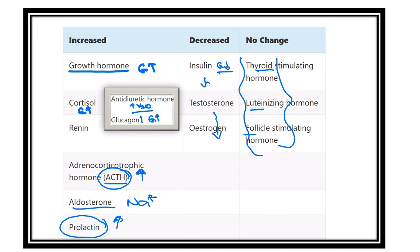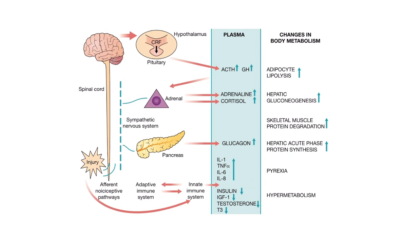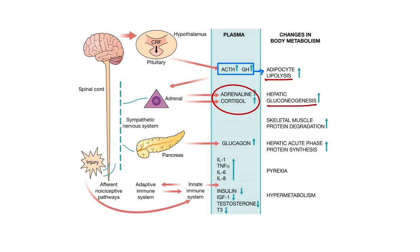This is a snapshot taken from Bailey and Love's surgery book. Here we can see different hormones that increase. First, adrenocorticotropic hormone and growth hormone — they are responsible for lipolysis and increasing lipid content in the blood. Adrenaline and cortisol also increase and are responsible for hepatic gluconeogenesis, so glucose increases. In the above condition, lipolysis and amino acids also increase. The glucagon function is to increase glucose.